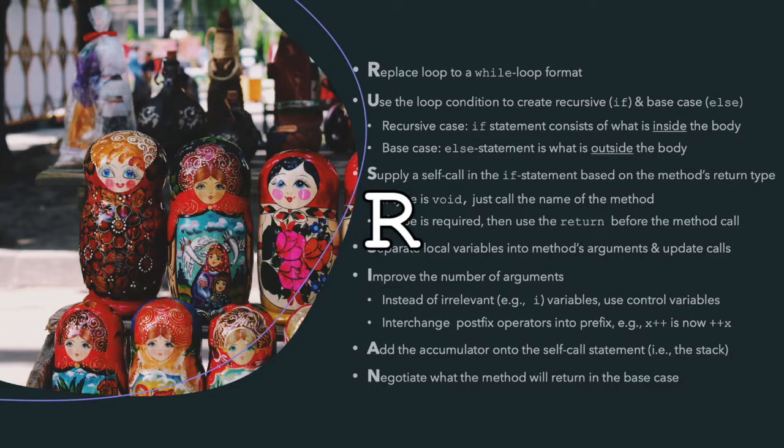The very first step is to replace the loop to a while loop format, followed by using the loop condition to create the recursive and base cases. The third step is to supply the self-call into the method's return type.